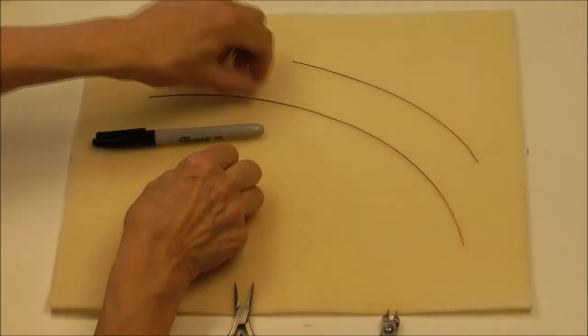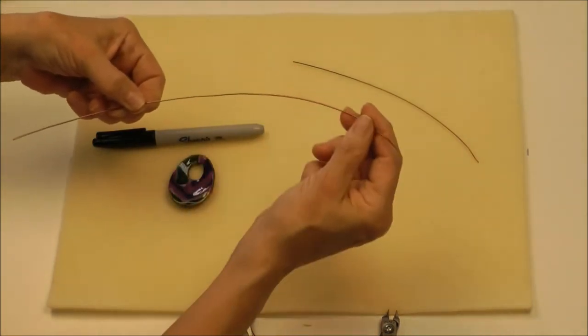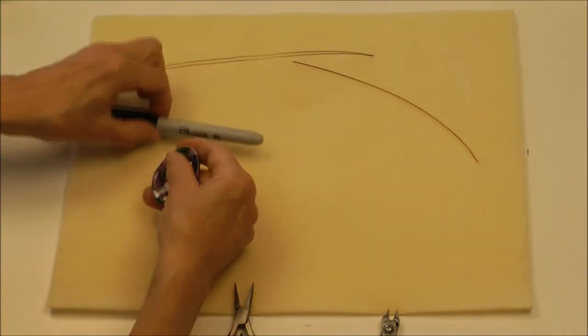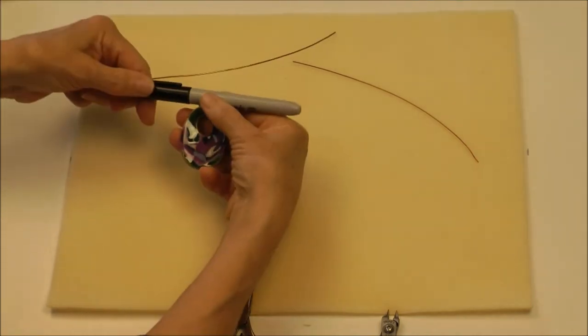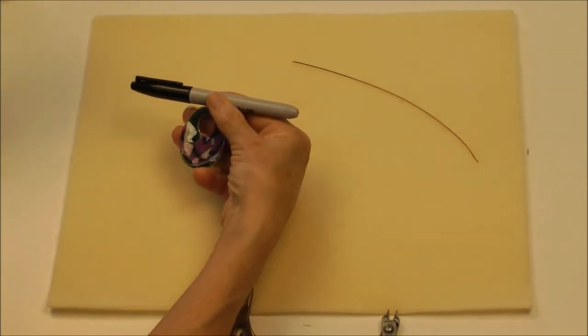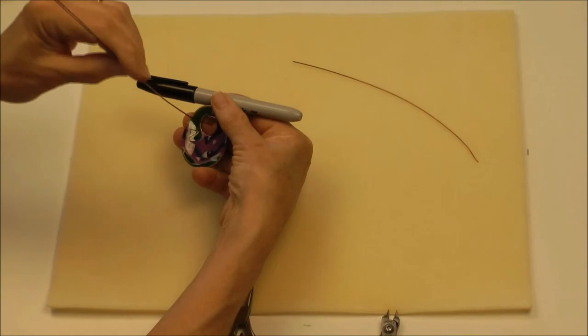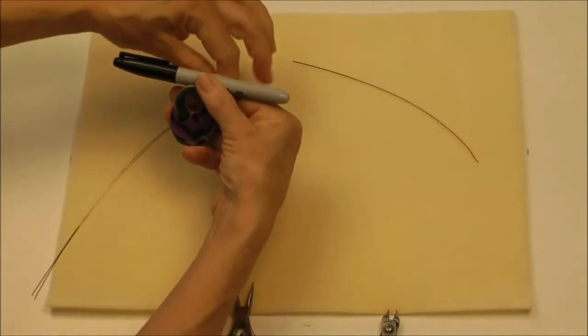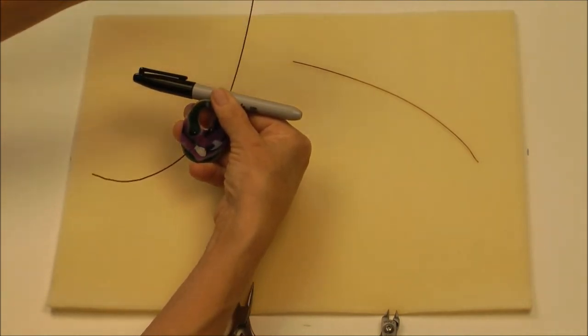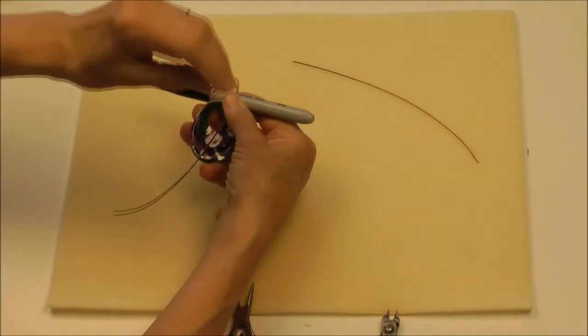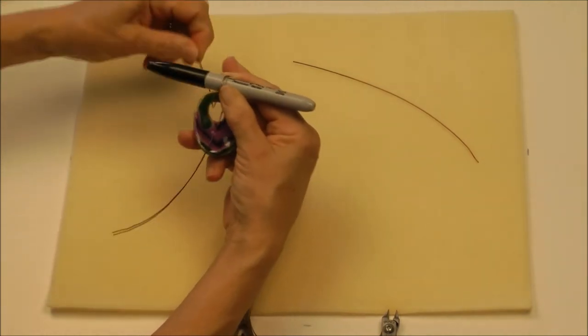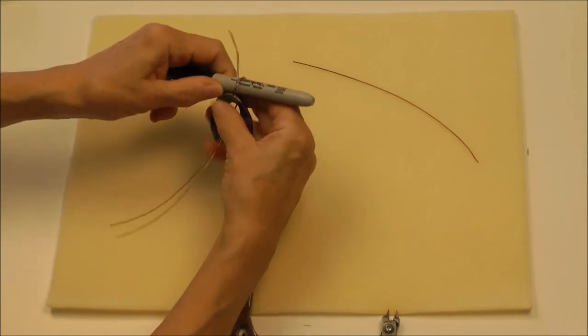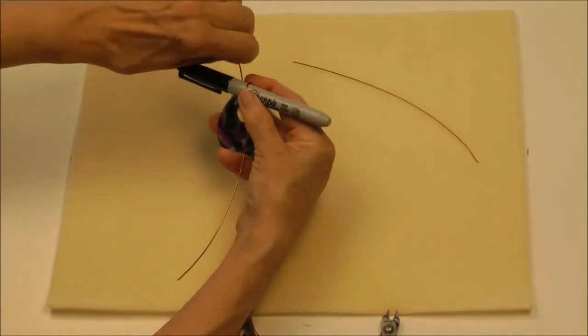I'm going to take a piece of 18 gauge wire, about a foot, and hold the Sharpie right on top of the pendant. This is going to move quite a bit as I work with it, and that's okay. I'm going to get that about halfway through and then start to roll the wire around both the pen and the bail, straightening it up as I go.